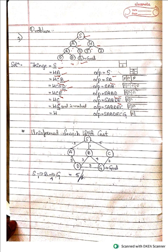Now C is here — it means it is backtracking. C is popped out; its child G is added. G is our goal node, so G is popped out. You are left with H, but since you have reached the goal node from the starting node, you stop here. What we understand is that DFS supports backtracking.